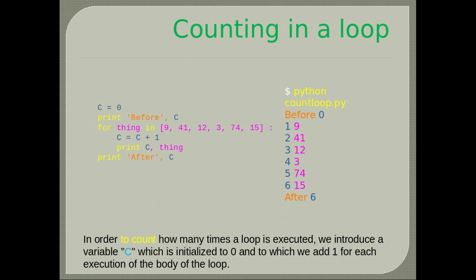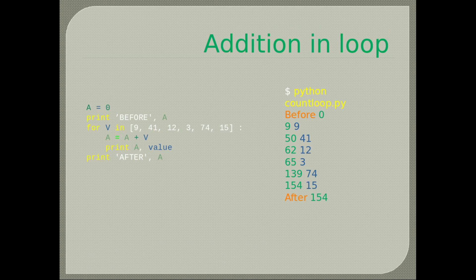Counting in a loop: to count how many times the loop is executed, introduce variable c initialized to zero and add one for each execution of the body of the loop. Addition in loop: there is a variable a that initially is zero, then is incremented with each value from the list. We print a every time and one of the values of the list in order.